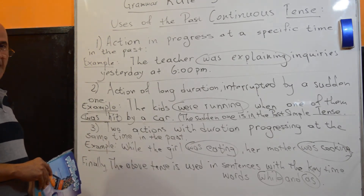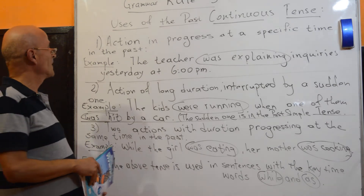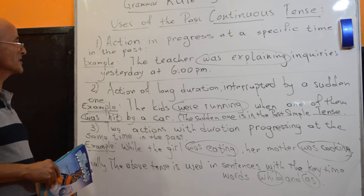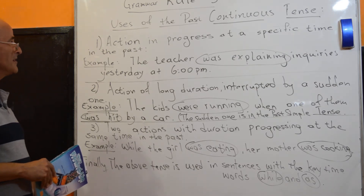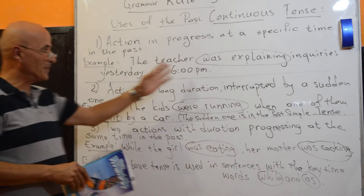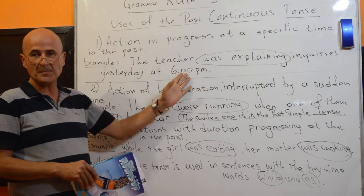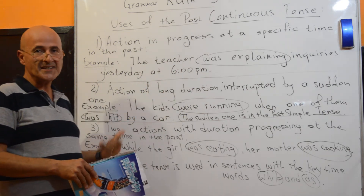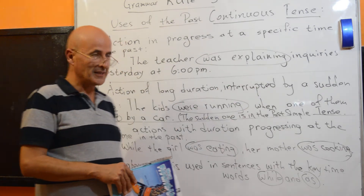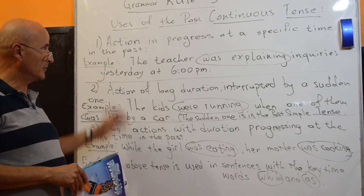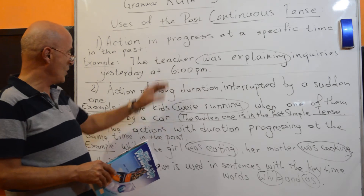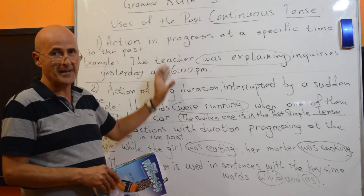The uses of the past continuous tense are three mainly. The first one states that an action can be in progress at a specific time in the past. For example, 'The teacher was explaining inquiries yesterday at 6 pm.' The verb 'was explaining' is in the past continuous tense, and the example refers to a specific time in the past — yesterday at 6 pm.